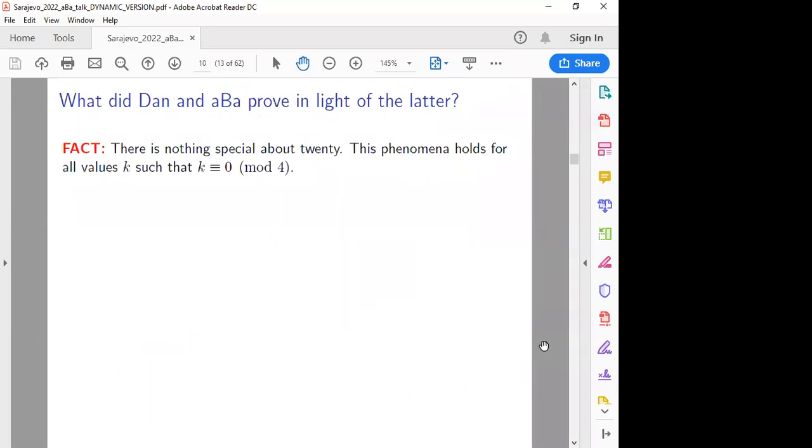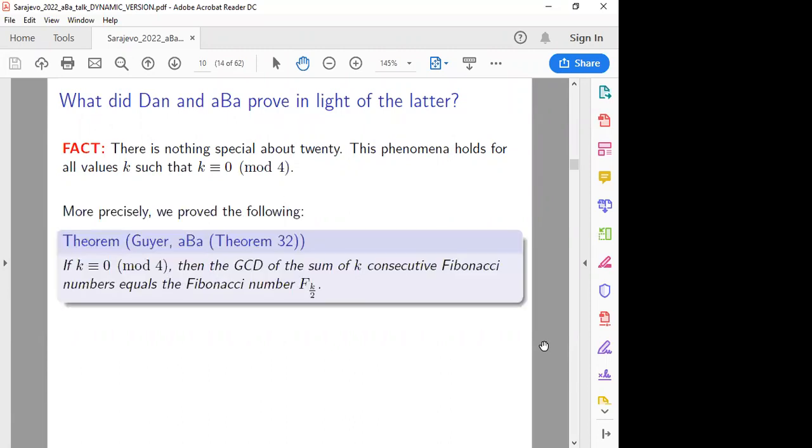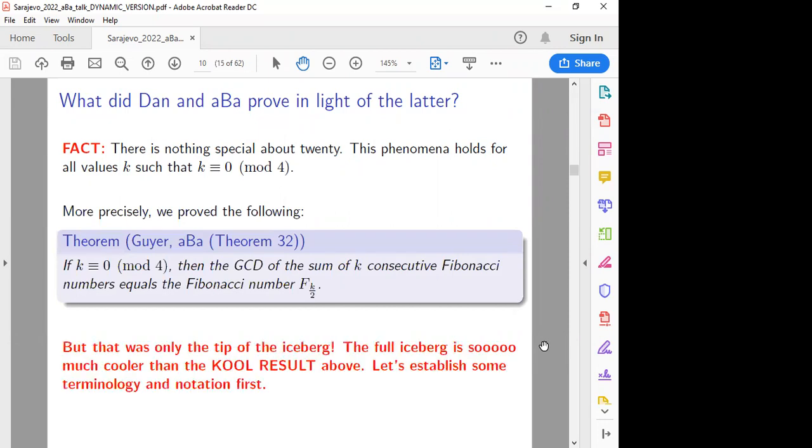So what did we prove in light of the letter? We showed that there's nothing special about the number 20. This phenomenon holds for all length K sequences, but length K sums that were K is divisible by 4. So more precisely, if you're in the case, you're going to zero by 4, the GCD and the sum of K consecutive Fibonacci numbers equals F Fibonacci number Fk over 2. That is one of our tiny little things that we proved. Tiny, so I say that's just the tip of the iceberg. The full iceberg is much cooler than the cool, like the cigarettes, result above.